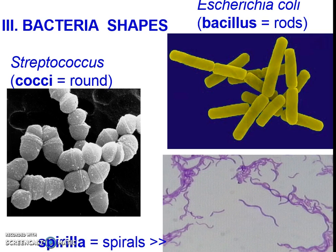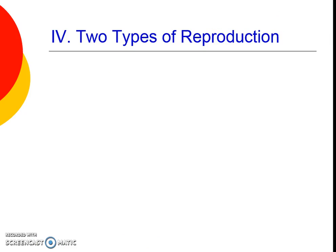Lastly, there's spirilla, which look like spirals — little pieces of pasta that are spirally shaped. Each individual spiral is an individual organism. We can see these shapes embedded into the names of organisms, so a lot of times that can help us know what the bacteria is going to look like.